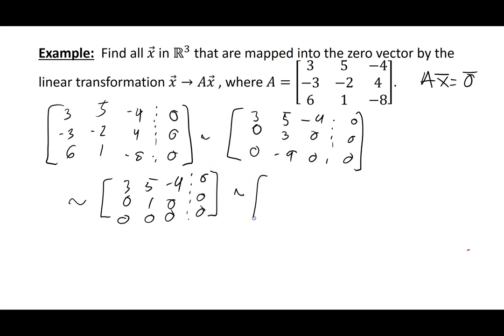And finally one more row reduction gives me 1, 0, minus 4 thirds, 0, 0, 1, 0, 0, 0, 0.